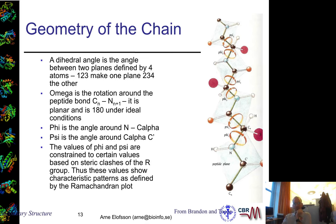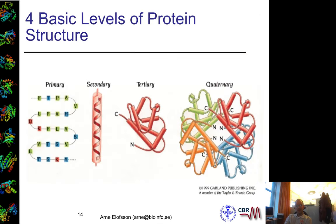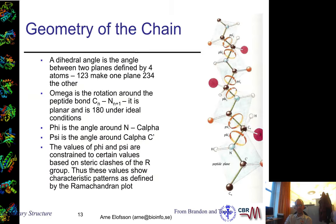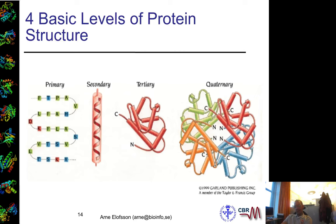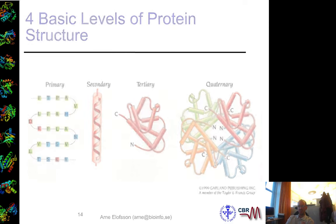The description of the phi and psi angles is often depicted in a two-dimensional plot called a phi-psi plot, or Ramachandran plot. This Ramachandran plot defines the secondary structures, and early work showed that there were basically two types of secondary structures: helices and sheets. This gives rise to what we call the hierarchical levels of protein structure — the primary sequence, the secondary structure detectable as helices, and the tertiary structure, which describes how the protein is folded and how different parts of the protein interact with each other.